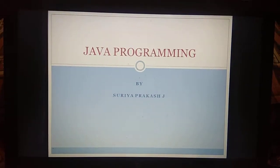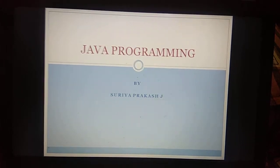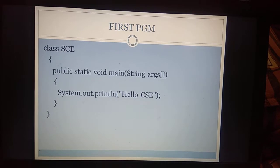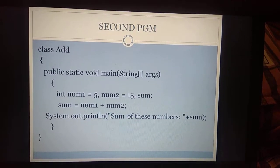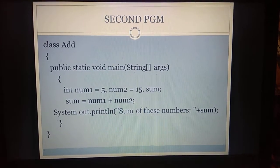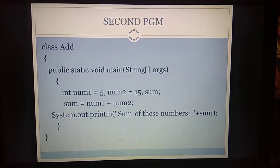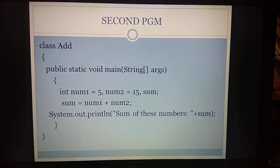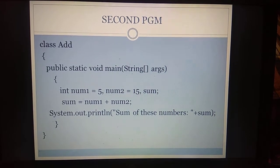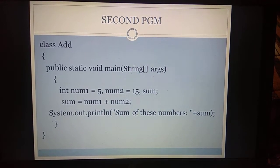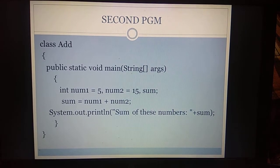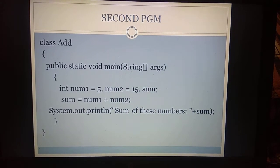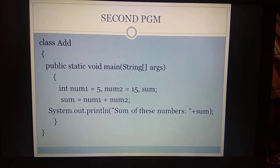Before going to this, we will discuss the first program. We already discussed the first program of basic programming and did an exercise. This is the second program what you are seeing on the screen. In the second program, we have a class named as 'add'. Inside the class we are having a main function. Public static void main — public is a public access specifier. Static means the function will be called without any object.